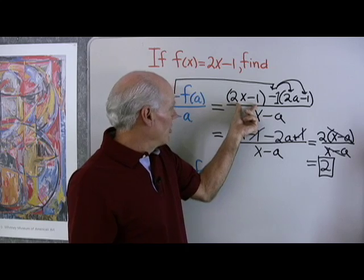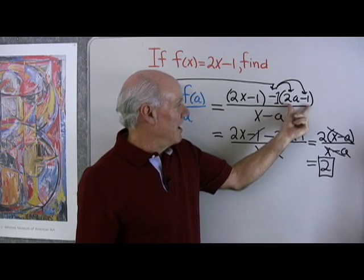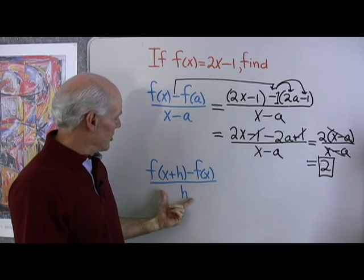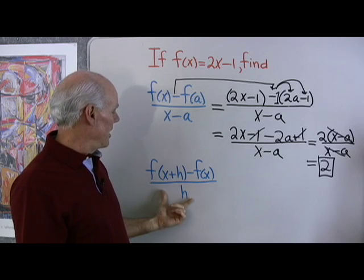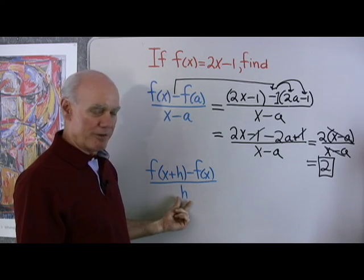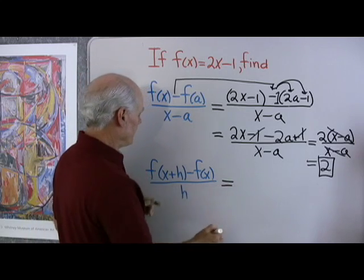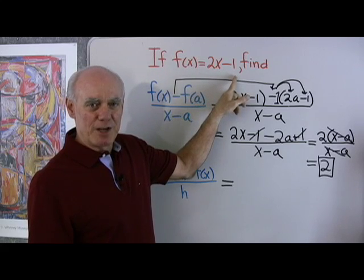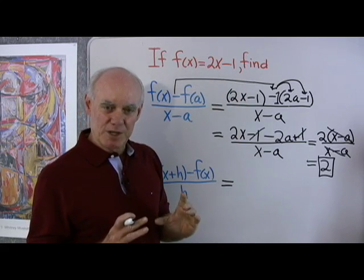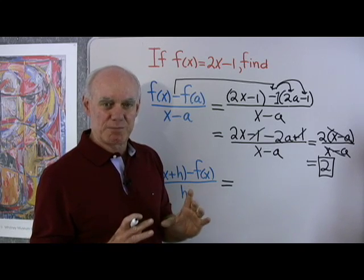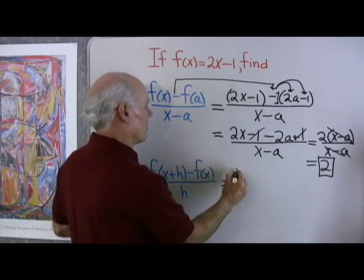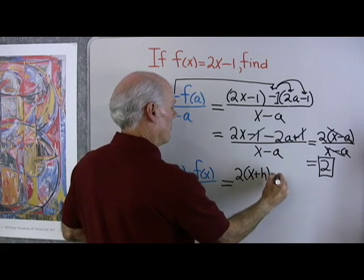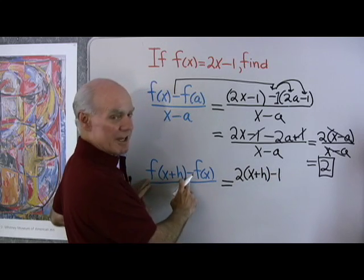So that complicated-looking expression simplifies down to just 2. With function notation, f(x) minus f(a) divided by x minus a — we do just what it says. Here's another similar expression: f(x+h) minus f(x), all over h. Well, f(x) is 2x minus 1, so f(x+h) is going to be 2(x+h) minus 1, which is 2 times x plus h, minus 1.